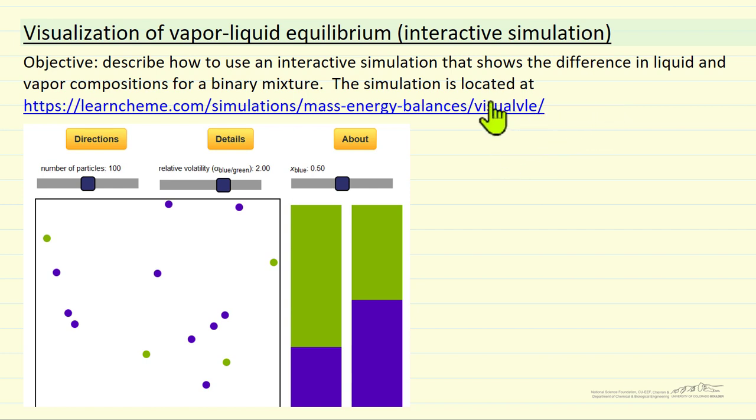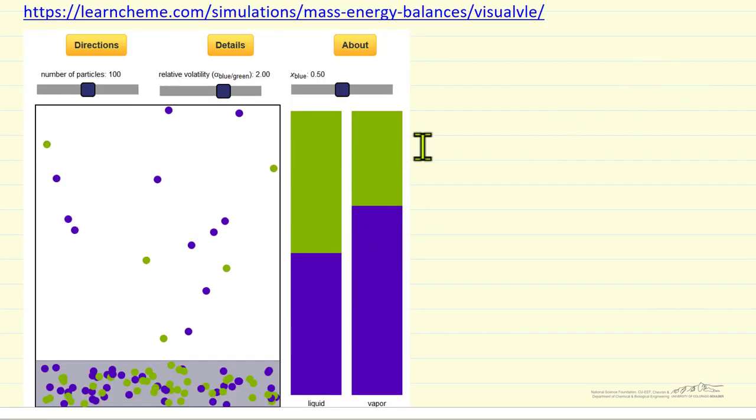The simulation is located at the link given here. What we're showing on the left side is green particles and blue particles representing molecules, and the liquid phase has a different ratio of green to blue than the gas phase.